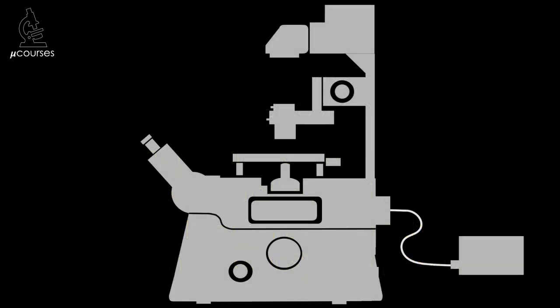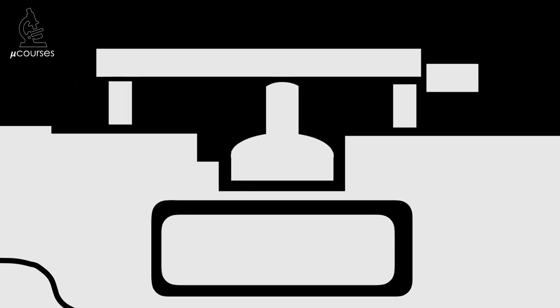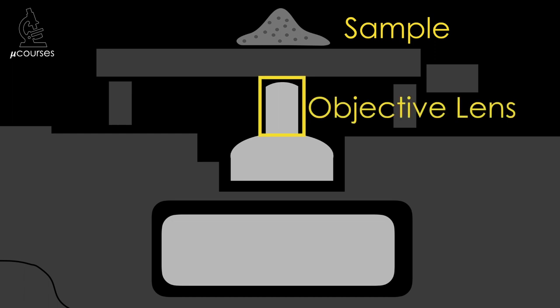To understand how filter sets are used to image fluorophores, let's look at where these filters are placed in the microscope. Light coming from the light source enters the fluorescence filter turret, which can hold multiple filter sets, each optimized for a particular type of fluorophore. In fluorescence microscopy, we most often use epi-illumination, which means that the objective lens is used to both focus the excitation light onto the sample and collect the emission light from the sample.